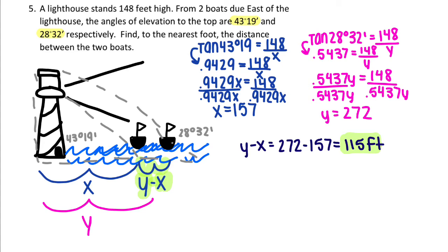First, let's solve for x. Tangent 43 degrees 19 minutes becomes 0.9429. Then you divide 148 by 0.9429 and you get x equals 157.